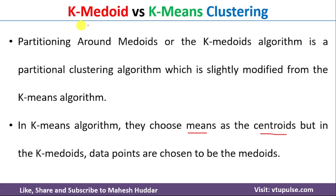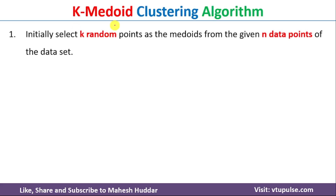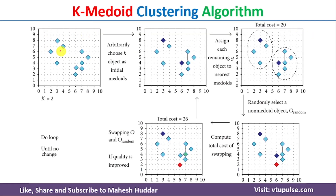Now we will discuss the K-Medoid clustering algorithm. The first step is to select K random points as the Medoids from the given N data points in the dataset. For example, if we have 10 data points and want to create two clusters, the value of K equals 2, so we select two random data points as the initial Medoids.